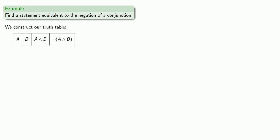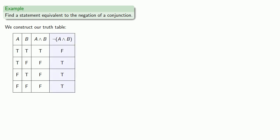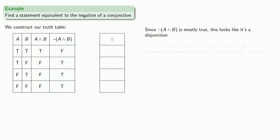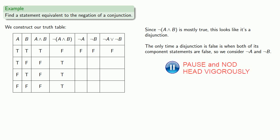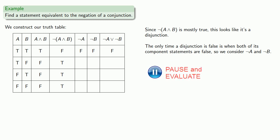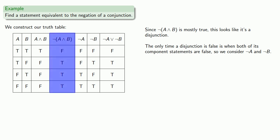How about the negation of a conjunction? Let's construct our truth table. The negation of a conjunction appears to be true in most cases. Since it's mostly true, it looks like a disjunction. Remember, the only time a disjunction is false is when both of its component statements are false, which suggests we might want to look at not a and not b and the disjunction not a or not b. We'll complete the rest of our truth table to verify their equivalence. It appears that the negation of the conjunction is the same as the disjunction of the negations — if one of them is false, so is the other, and if one of them is true, so is the other. So we would say they are logically equivalent.